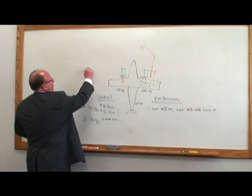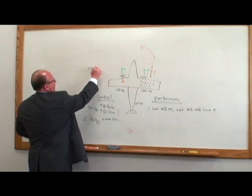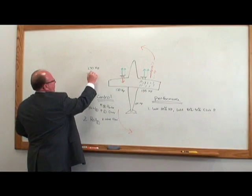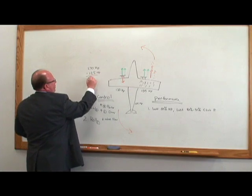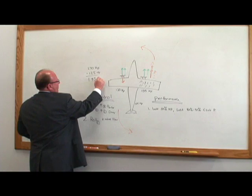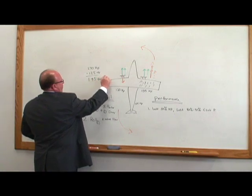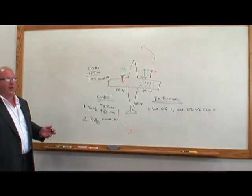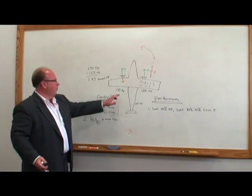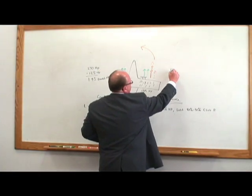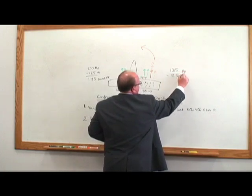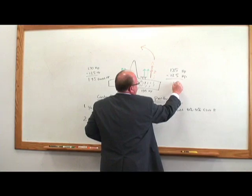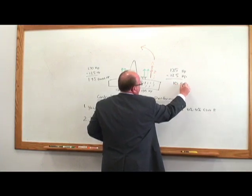135 plus 135 is 270 horsepower minus 125 horsepower is 145 excess horsepower to climb with. However, if I cut one of the engines out, assuming it requires 125 horsepower for level flight, I now only have 10 excess horsepower.